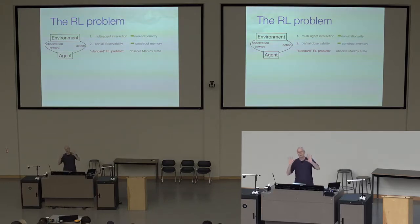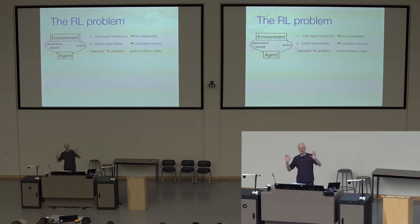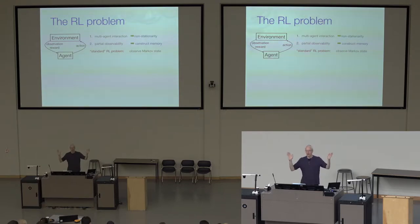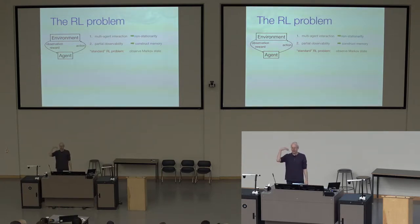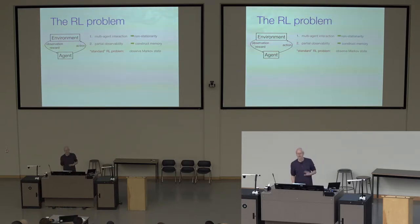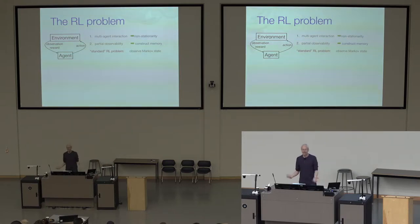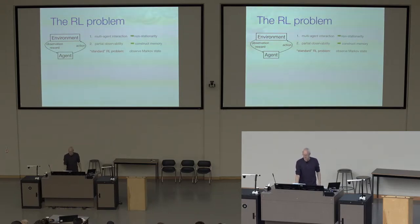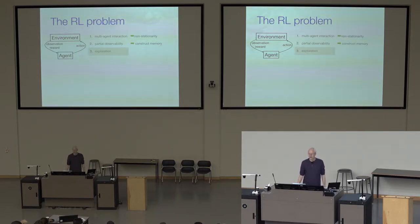Probably when you see this picture, you're thinking of this somewhat more standard problem where we simplify one further level by assuming complete observability - that the environment is simple enough that if I just look at it right now, I know everything I need to know. History is irrelevant. Everything I need to know about how to act in the future is summarized by my current immediate observation. We typically call this the Markov state assumption: a state is Markov if given the state, the future is independent of the past.